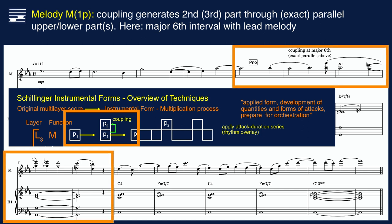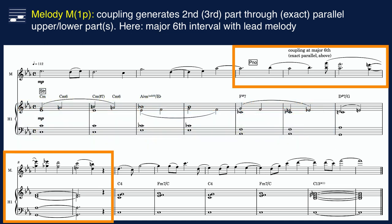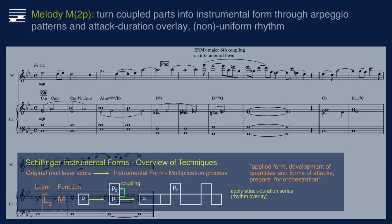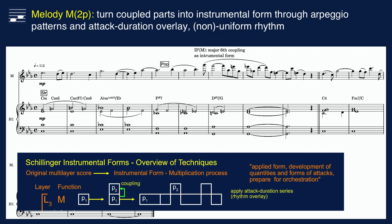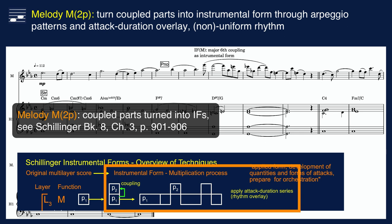In the example A-phrase, I use an exact parallel major-sixth coupling above the original melody. Next, look at the creation of an instrumental form through attack multiplication. Here, a non-uniform duration rhythm alternating between the two parts uses an eighth-note time unit.